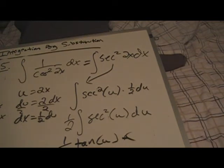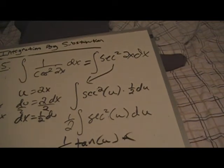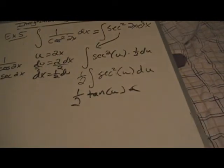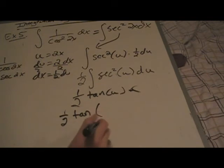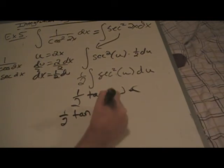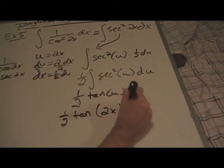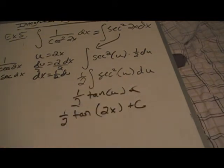Times 1 half. Of course, keep our constant multiple there. And plug in what we know. So, 1 half tangent. Oh, look at that. We have u. Let's plug in 2x there. And keep your plus c. And we're good to go.